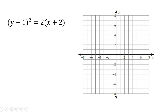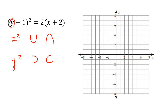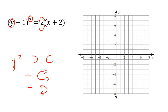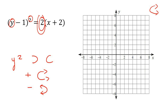Here's the next example. Step one: up, down, left, or right? It's y that is squared, so we're definitely going left or right. This number is positive, so if it's positive it faces right; if it's negative it faces left. We have a positive, so the graph should face to the right.